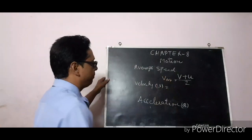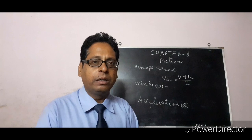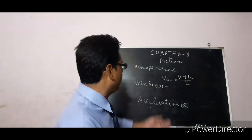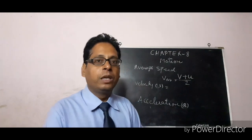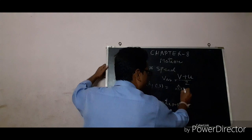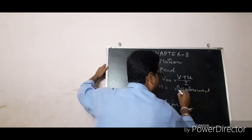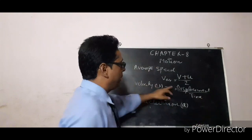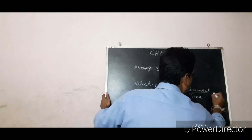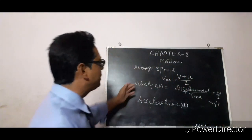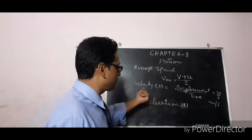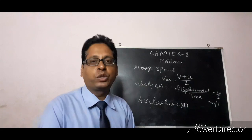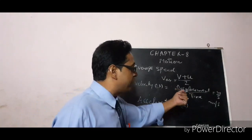Now, velocity means speed in a particular direction. In mathematical form, velocity is equal to displacement upon time. The SI unit of displacement is meter and time is second, so the unit is meter per second — the same as the unit of speed. Since displacement is a vector quantity, velocity is also a vector quantity.